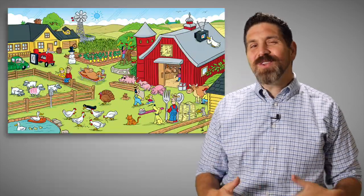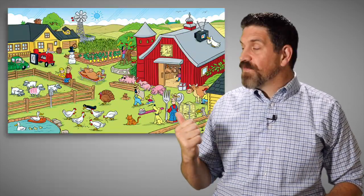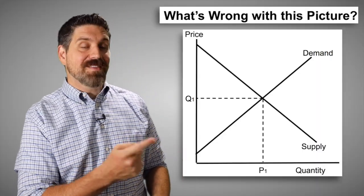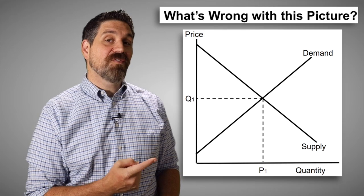Hey internet, this is Jacob Clifford. Hope you're ready for a review game. The game is called What's Wrong With This Picture and it's inspired by the back of cereal boxes. You know the game, they give you an image and you have to figure out how many things are wrong with the picture, except we're doing it with graphs. This graph is wrong, you have to find the mistakes.